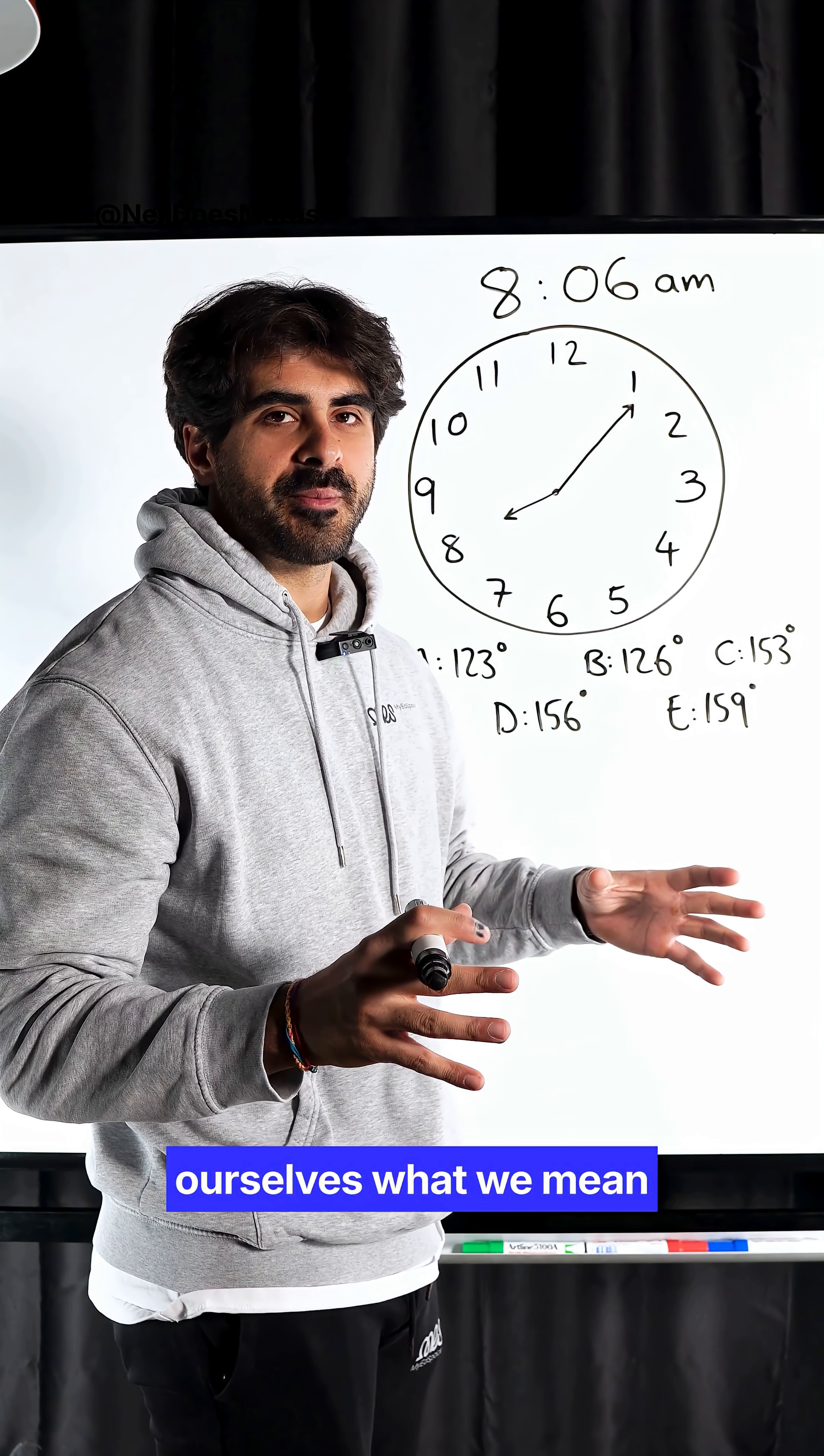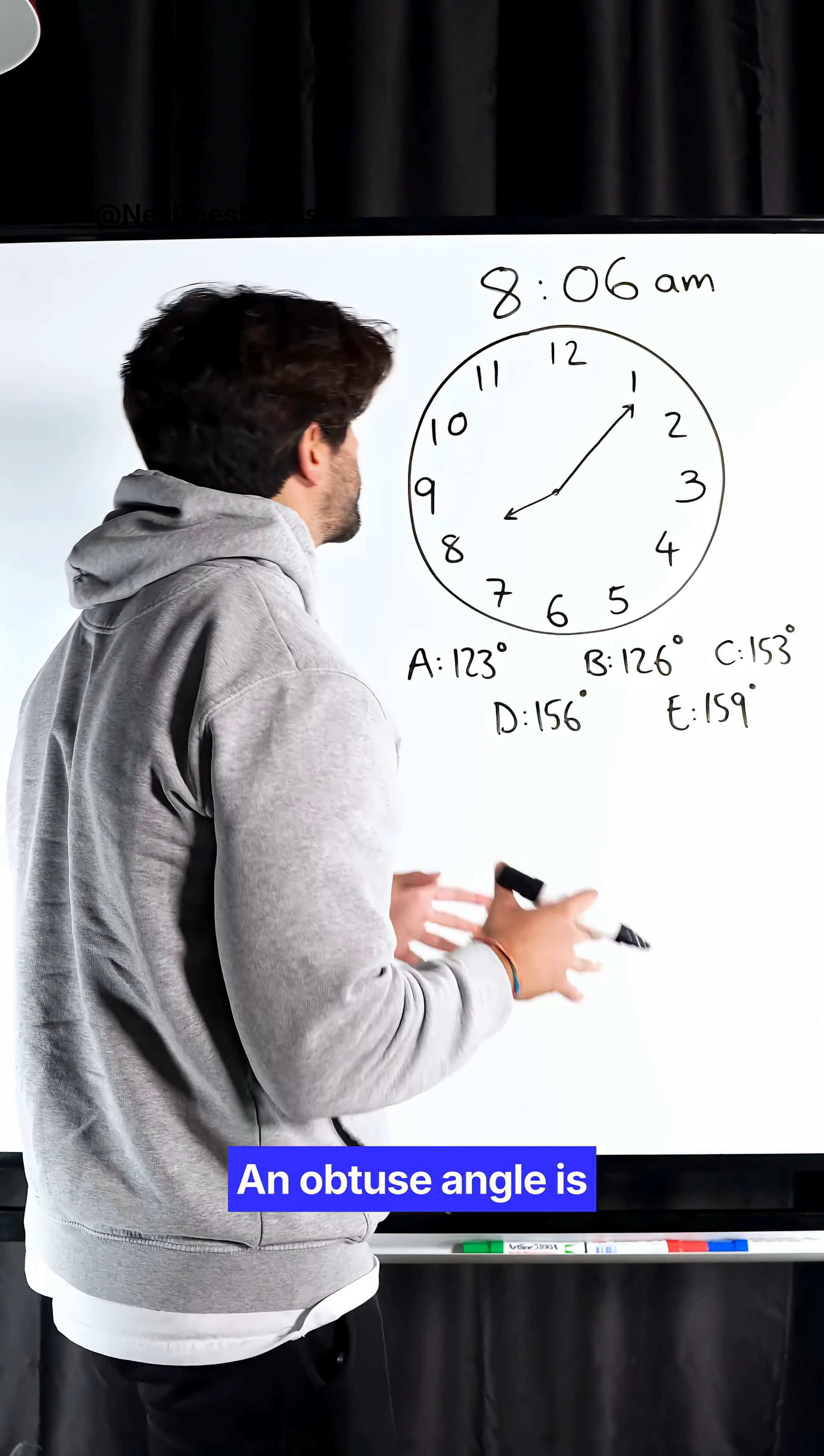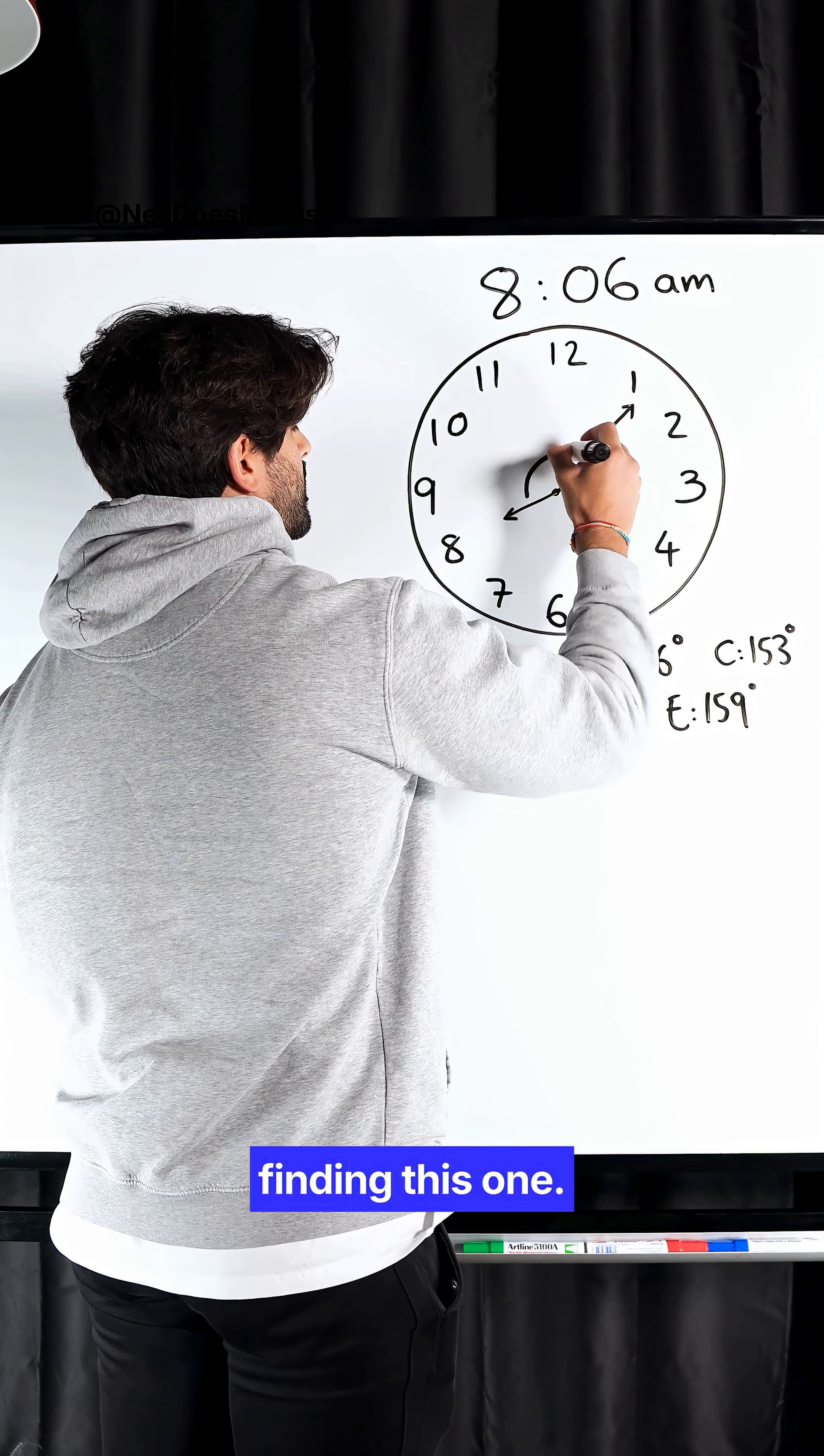First, let's remind ourselves what we mean by an obtuse angle. An obtuse angle is an angle between 90 and 180 degrees, which means we're finding this one.